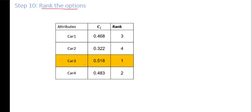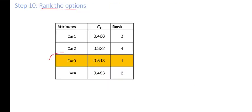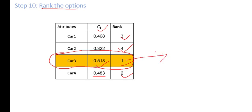Step number 10: rank the options. A higher value of C_i indicates a more preferable option. The best option has C_i of 0.518, ranked 1st. Car 4 with 0.483 is ranked 2nd, followed by rank 3, and car 1 and car 2 share rank 4. So if we have to select one car, we go for car 3 using the TOPSIS method. Thanks for watching, and in case of any question or doubt you can comment.